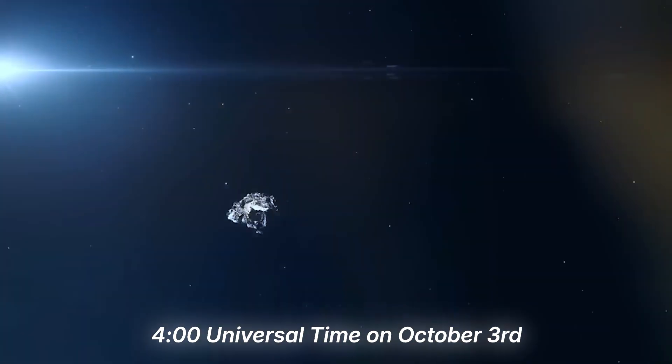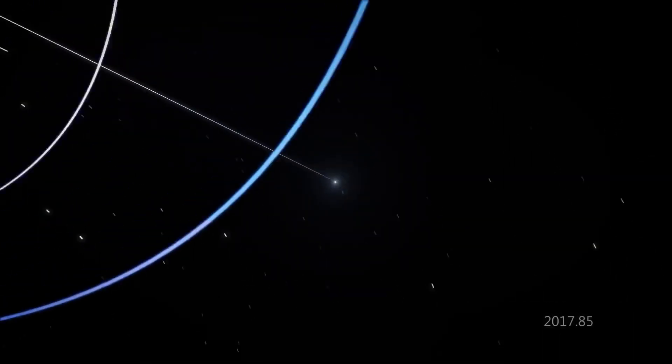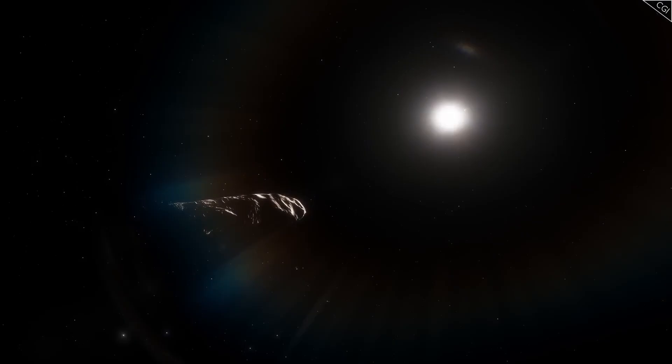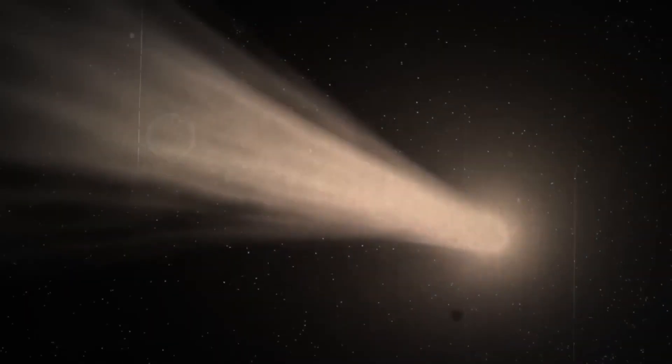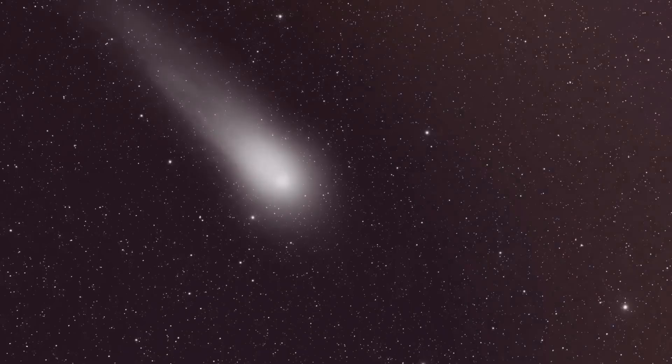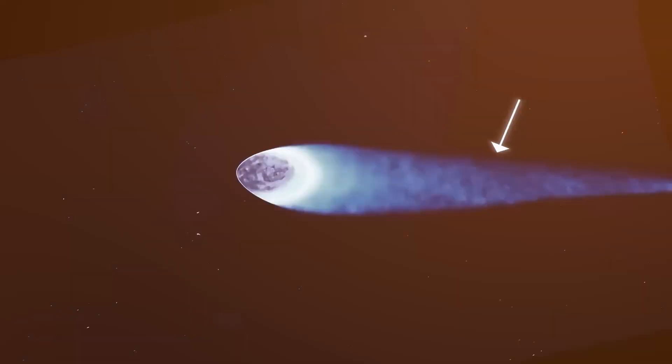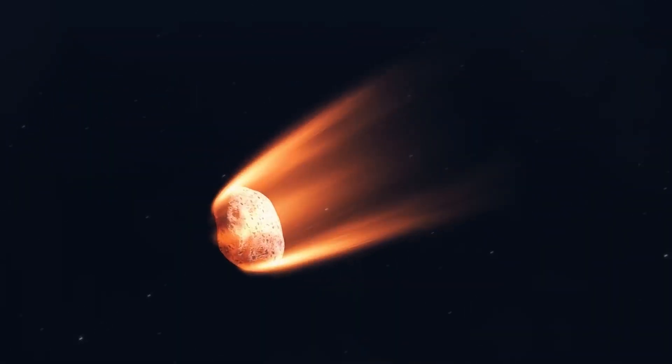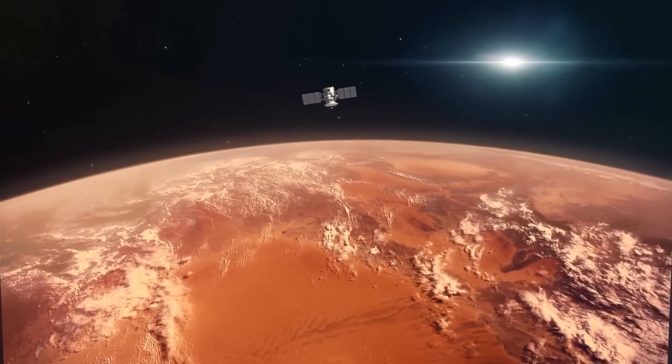At exactly 4 o'clock Universal Time on October 3rd, something extraordinary happened. For months, astronomers had prepared for the moment when the interstellar object 3i Atlas would sweep past Mars, the closest approach it would ever make to any planet on its long, one-way journey through the solar system.